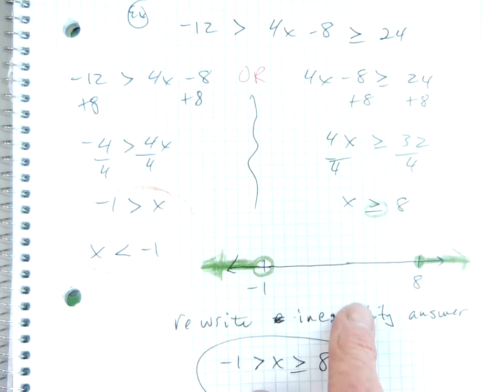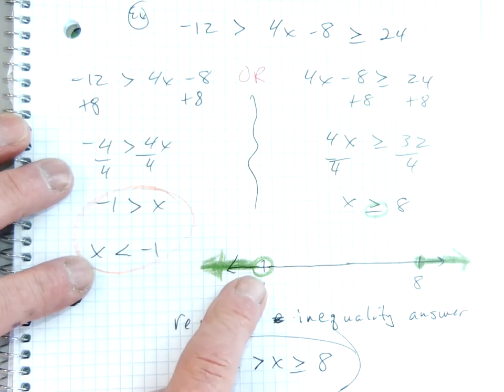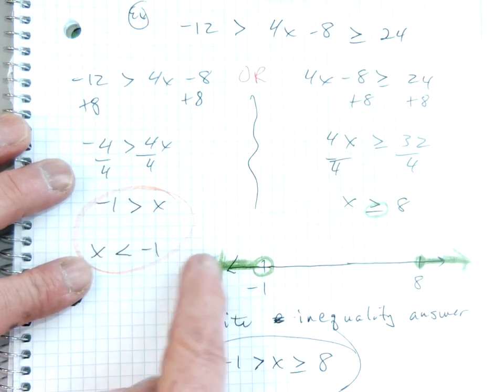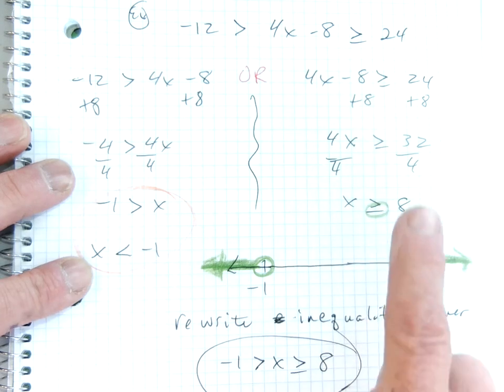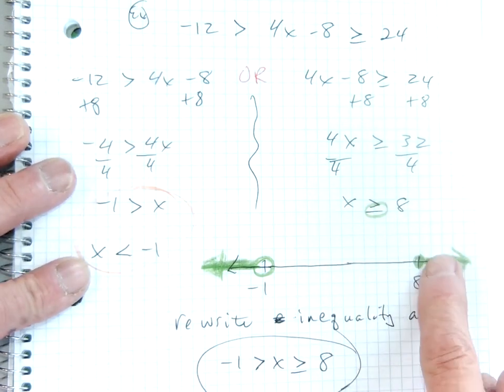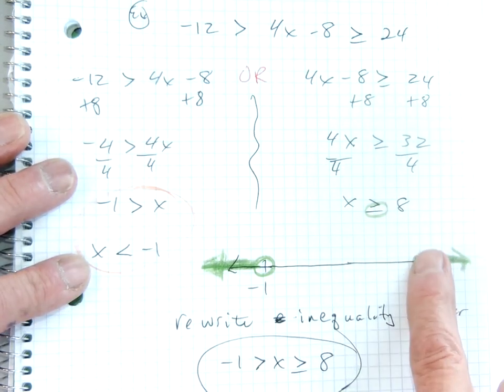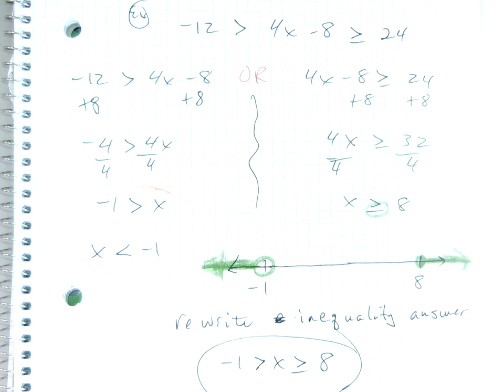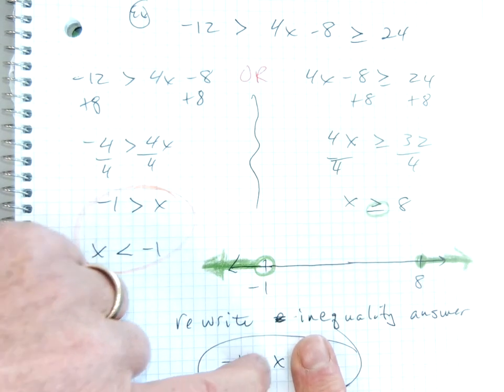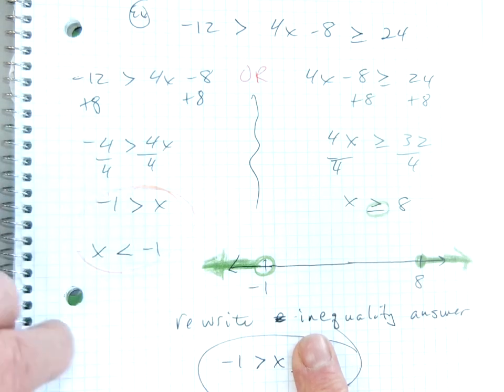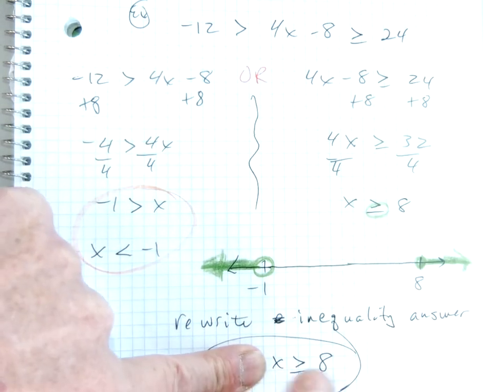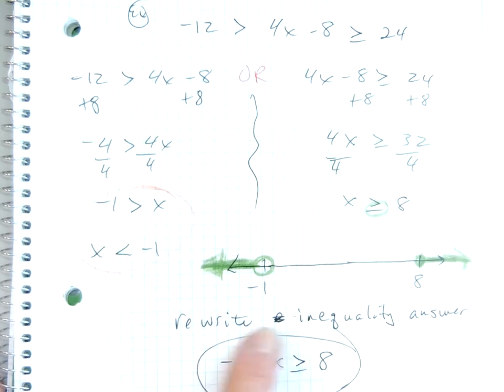So then when I graph both of these to be less than negative 1, open circle. Less than negative 1 is shaded this way. Greater than or equal to 8, solid dot, and I go this direction. Now if I want to rewrite the whole thing, it does say x is less than negative 1, or x is greater than or equal to negative 8. So I rewrite my equation.